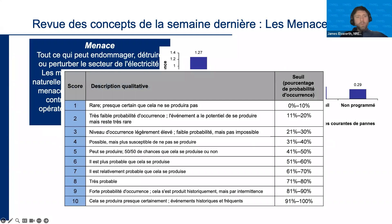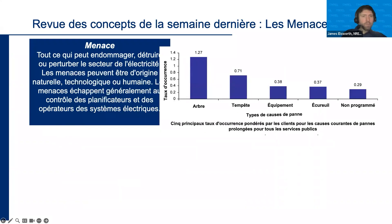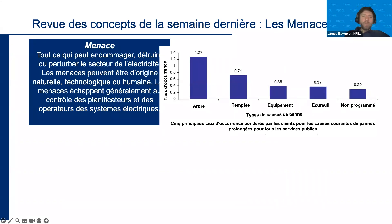To quickly review from last time: a threat, by our definition, is anything that can damage, destroy, or disrupt the power sector. Threats could be natural, technological, or human-caused. Typically you think of threats as things not within the control of power system planners — things that happen to you rather than something you can control.